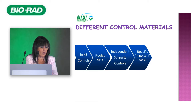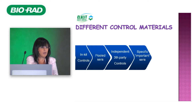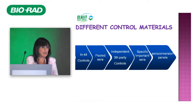We therefore need to introduce specific important sera into our quality control system. Each laboratory typically sets aside important sera, or obtains seroconversion panels — either collected in-house or from manufacturers. These panels from manufacturers can provide additional information on assay types that are very tricky.